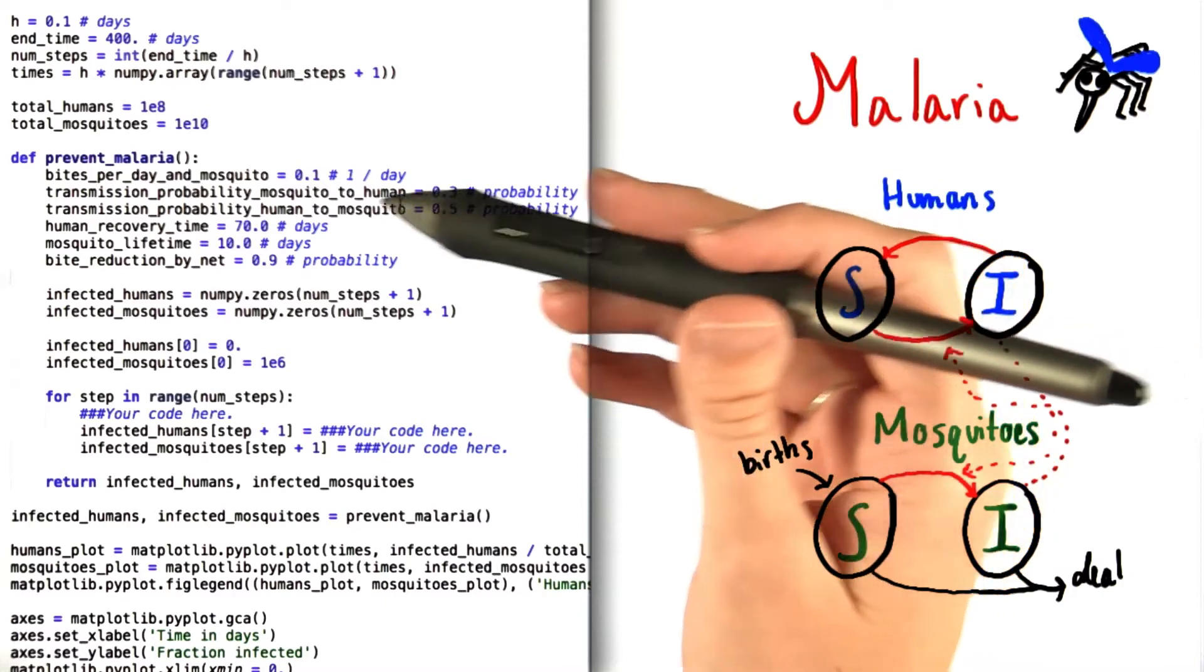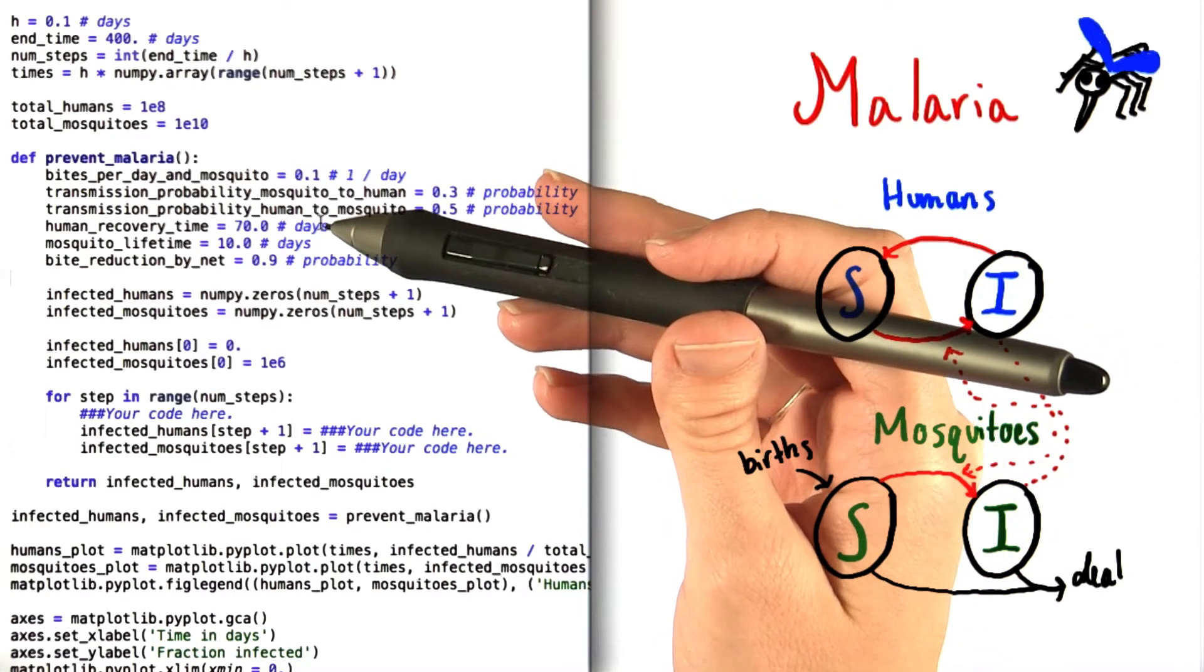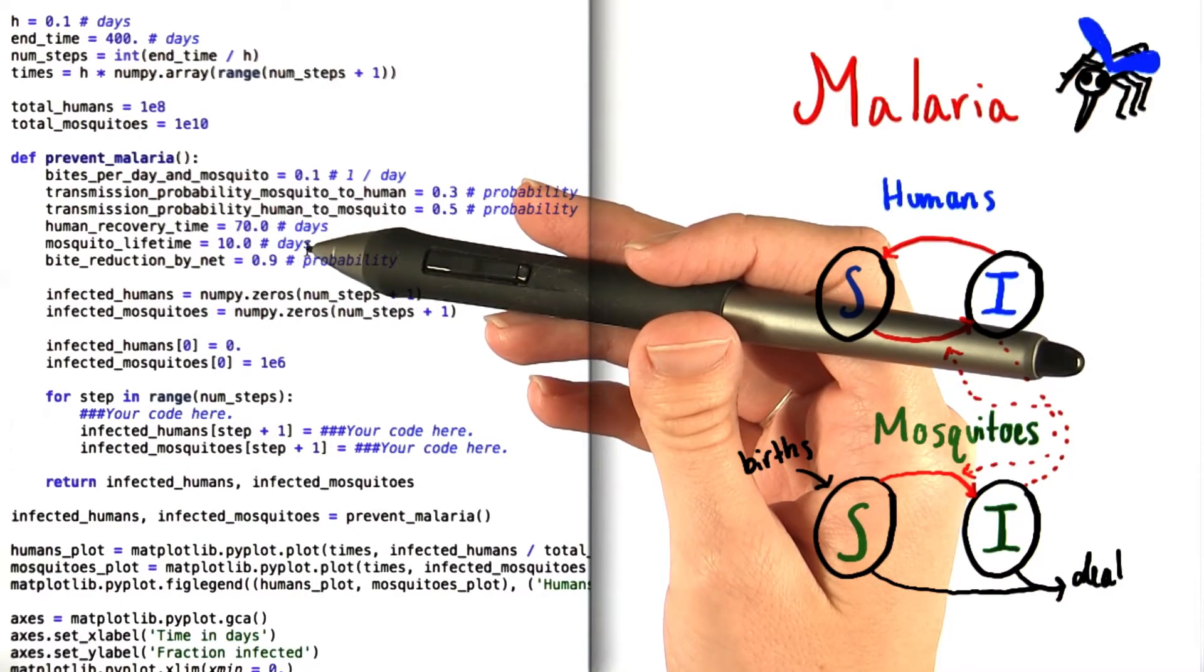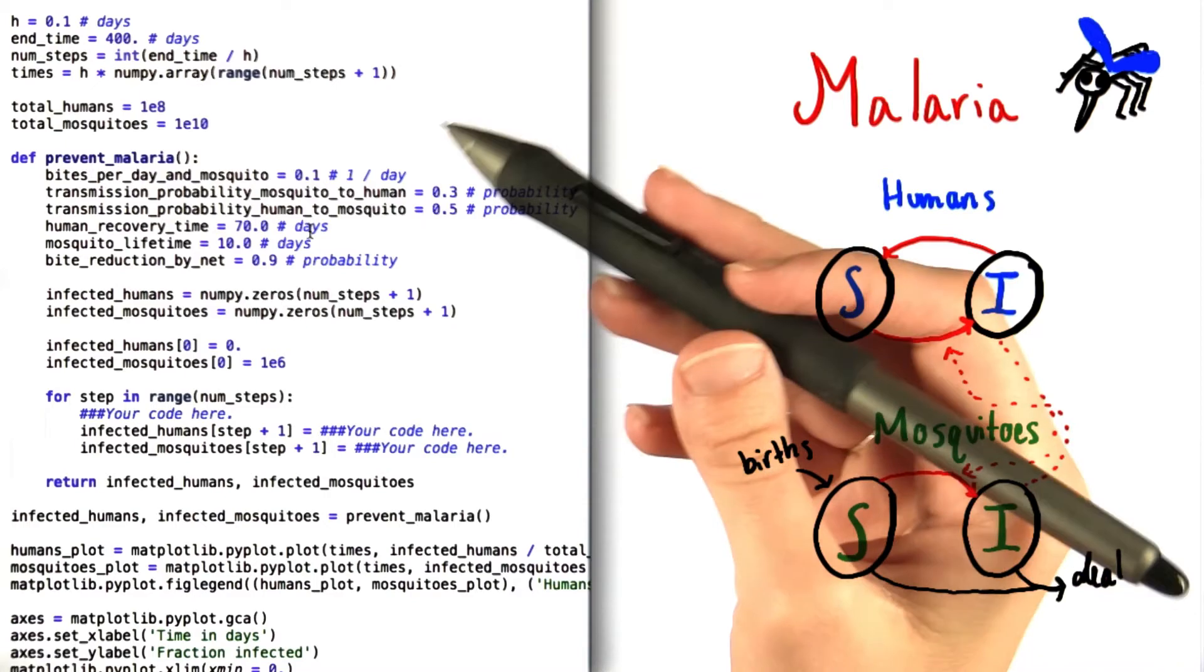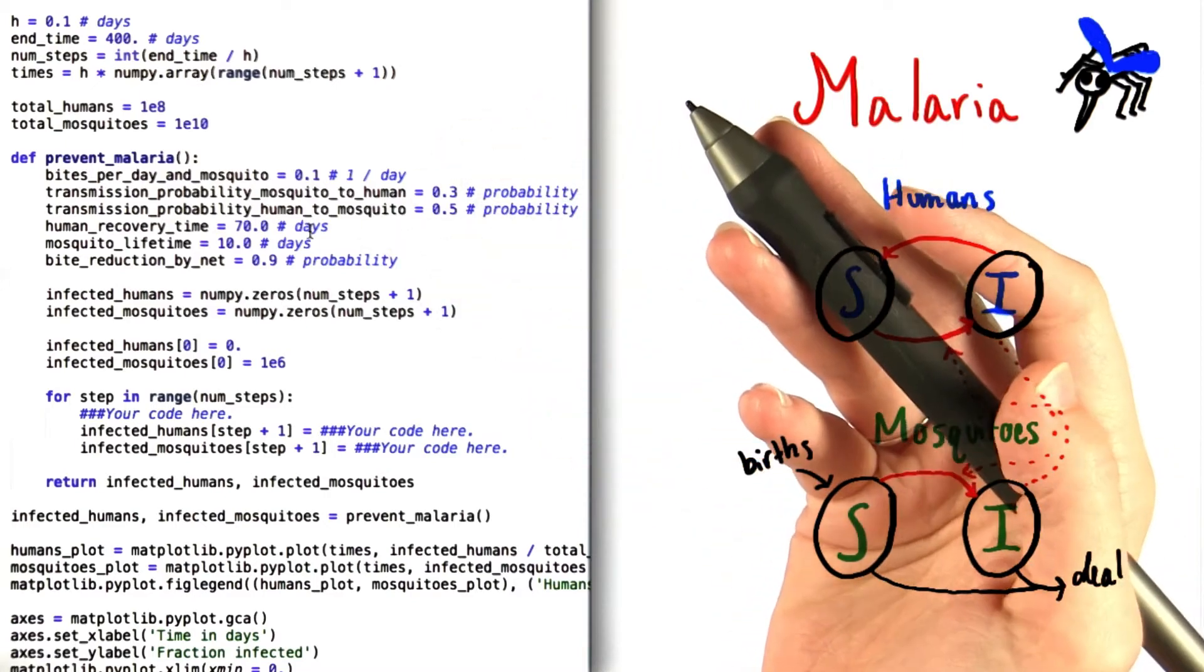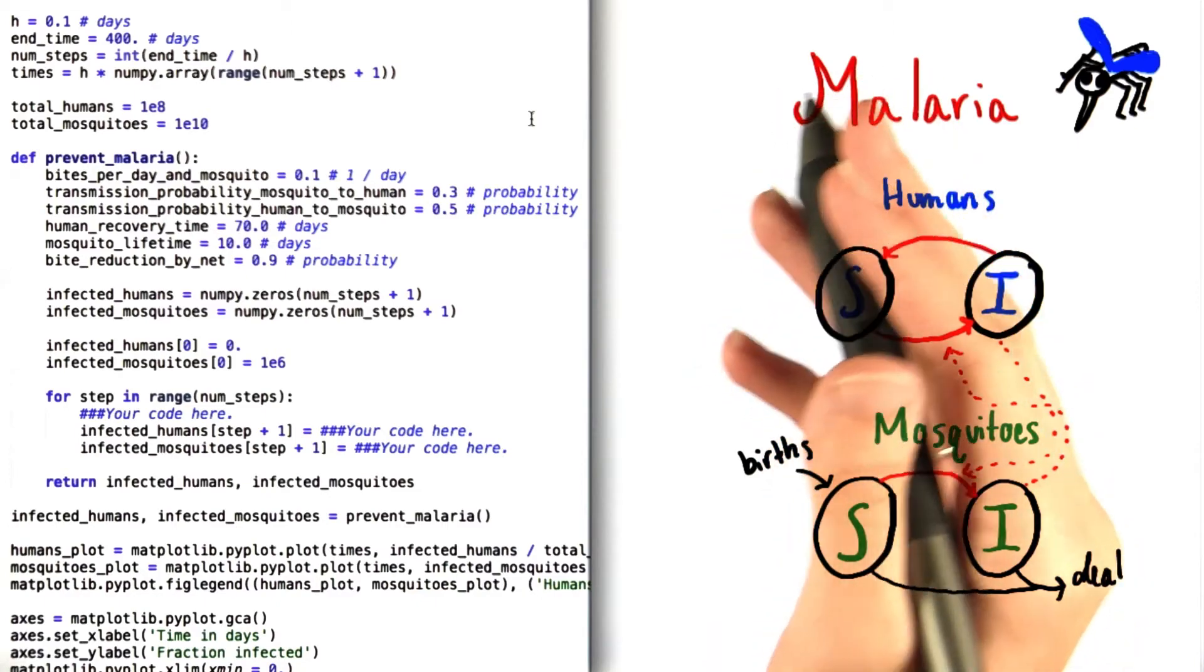Once infected, it takes a human approximately 70 days to recover. At this point, it's important to notice that mosquitoes only live for 10 days. Clearly, humans also have a finite lifetime, but compared to mosquitoes, we might as well be immortal, even if we do end up with malaria. So that's what we're going to pretend for the purposes of this problem.